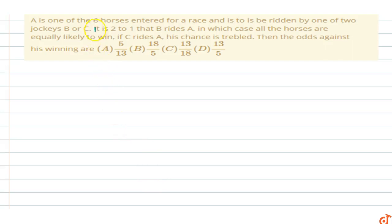In this question, A is one of six horses entered for a race and is to be ridden by one of two jockeys, B and C. It is 2 to 1 that B rides A, in which case all the horses are equally likely to win. If C rides A, his chances are tripled, then the odds against his winning are.